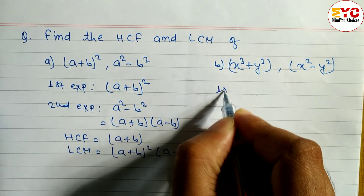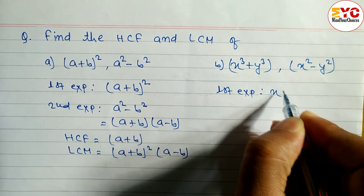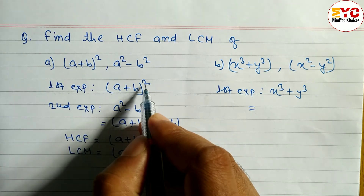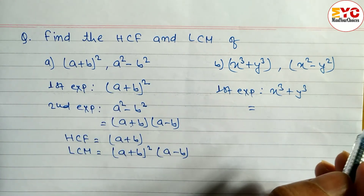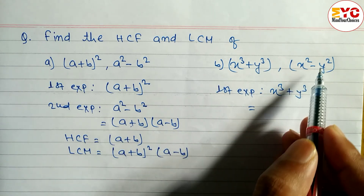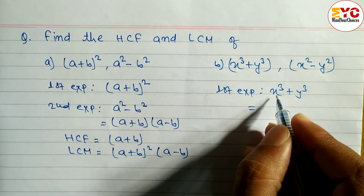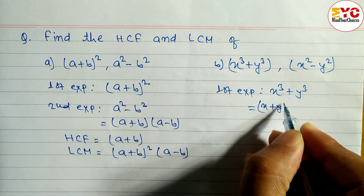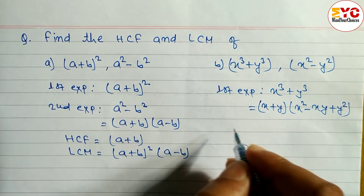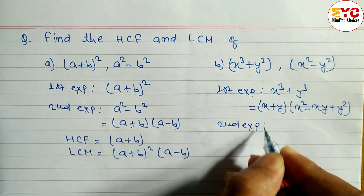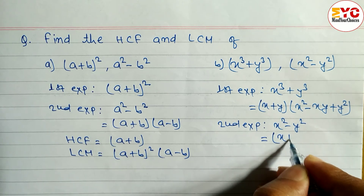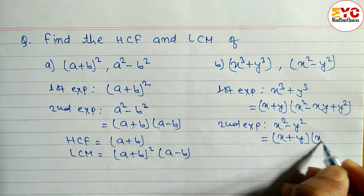In the second question, the first expression is X cube plus Y cube, so we have to use the formula. If the question is in the form of A cube plus B cube, we use the formula: X plus Y times X square minus XY plus Y square. Similarly, the second expression is X square minus Y square. The formula of A square minus B square is A plus B, A minus B, so we can write X plus Y times X minus Y.